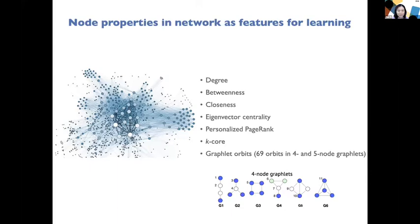Instead, in our project we propose to consider node properties as features. Our hypothesis is that we could look at nodes or genes in the network that show similar structural properties as autism genes. If we can identify those structurally similar genes, we can test whether they really have a high association with the disorder. We considered a number of network properties, including six network centrality measures: degree, betweenness, closeness, eigenvector centrality, personalized PageRank centrality, and k-core. These measure how structurally important one node is within the network.